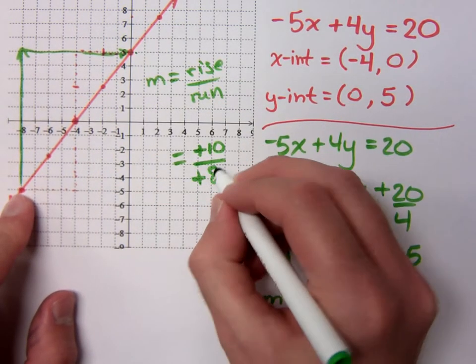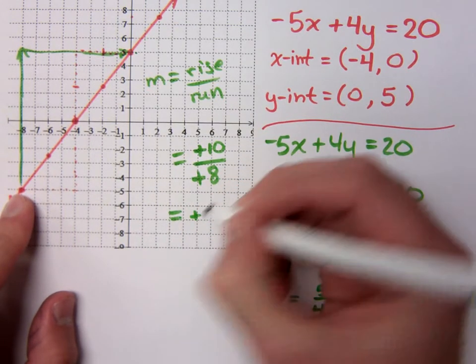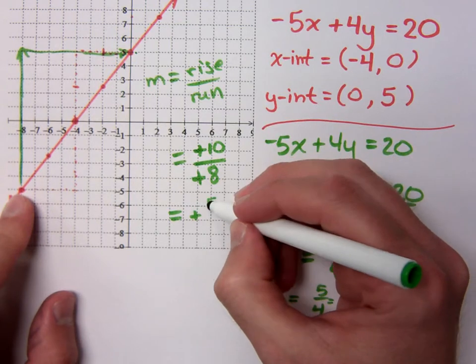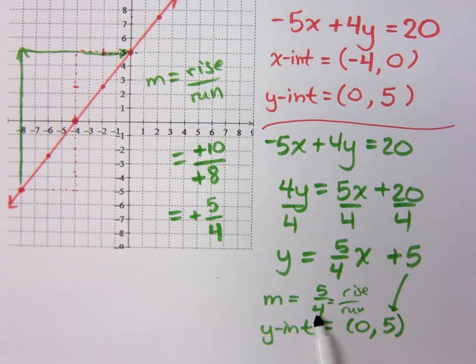How far to the right did I go? 8. So what's 10 over 8? Positive over positive is positive. How do you reduce 10 over 8? It's 5/4. Right? And that's the same thing I got here for my slope.